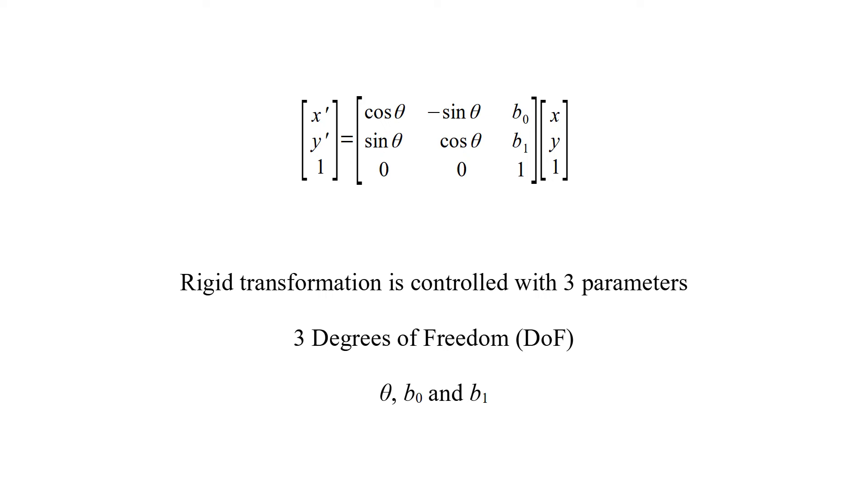Rigid transformation is controlled with three parameters: Theta, B0 and B1. So, rigid transformation has three degrees of freedom.